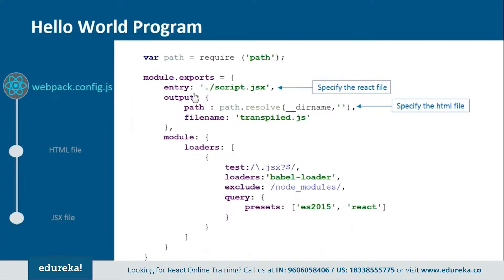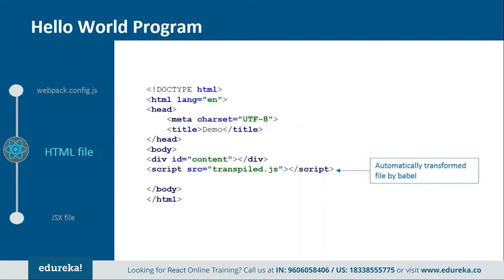In the webpack.config.js file you provide the entry and output points for rendering. Here we tell it that script.js contains the React code, and this code will be transpiled by the Babel loader into transpile.js — basically specifying which file gets transpiled to which one and how. Next, the HTML file is a basic file where we add one div tag and one script tag. Inside the div tag we provide an id so we can reference it from the JSX file, and the script tag references the transpiled file created by Babel.